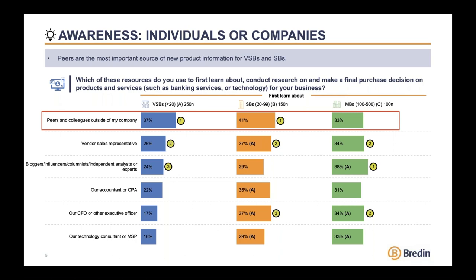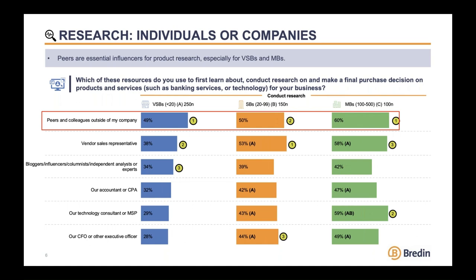The same holds true for what we call small businesses — those 20 to 99 employees. A little bit different for the biggest businesses: they're more likely to rely on bloggers or influencers, but peers still play an important role at the awareness stage. At the research stage, peers play perhaps even more of an important role. For very small businesses, they are number one. For small businesses of 20 to 99 employees, they're number two, but pretty close behind vendor sales representatives. And for the biggest businesses, peers actually become number one. Peer word of mouth is really important for how small business owners ultimately research and make a purchase decision.